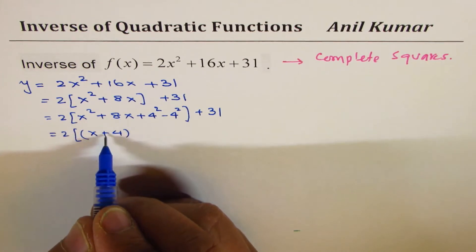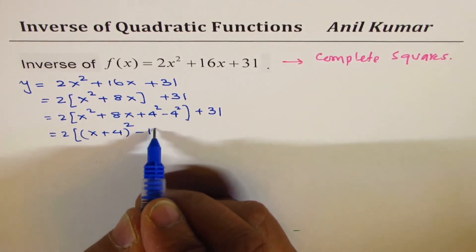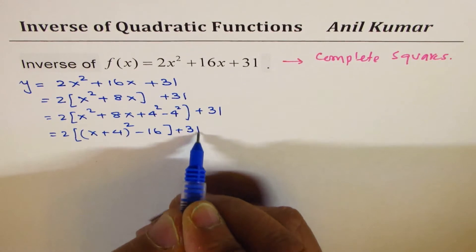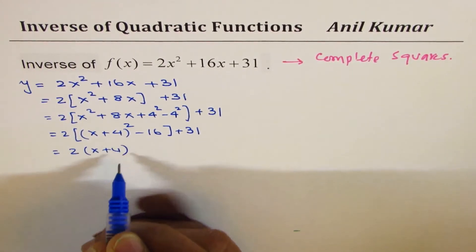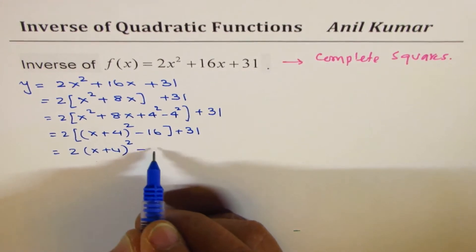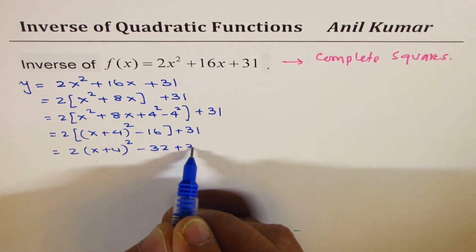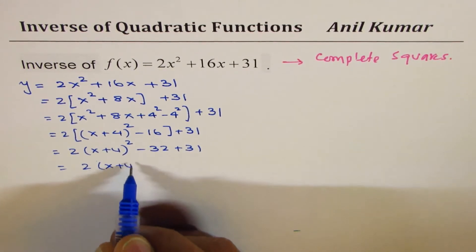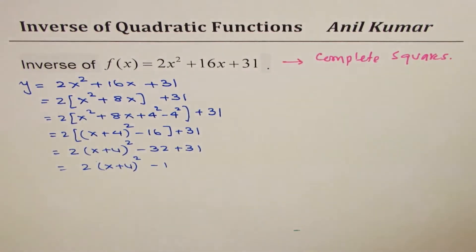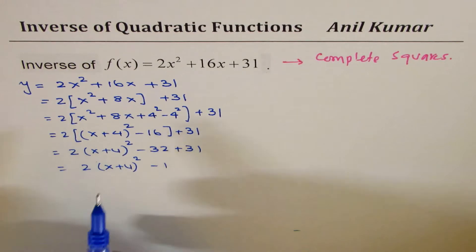So, we write plus sign and bring in 4 whole square minus 16 plus 31. Open this bracket, so we get 2 times x plus 4 whole square minus 32 plus 31. And that gives us 2 times x plus 4 whole square minus 1. So, we get our function in the vertex form.